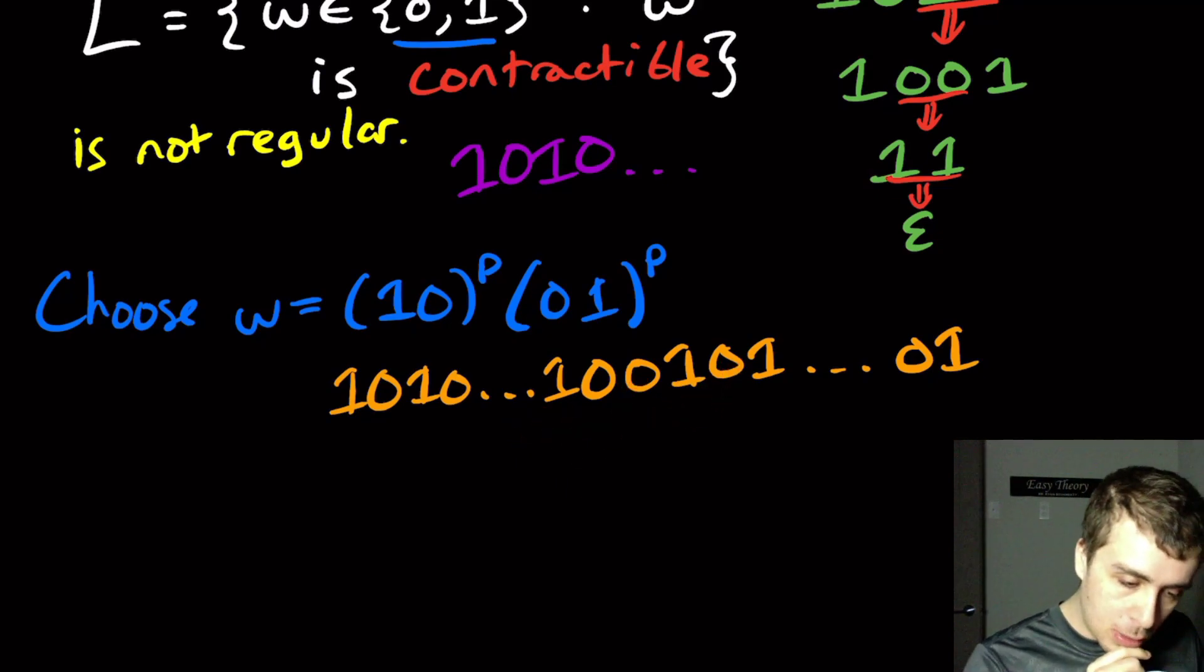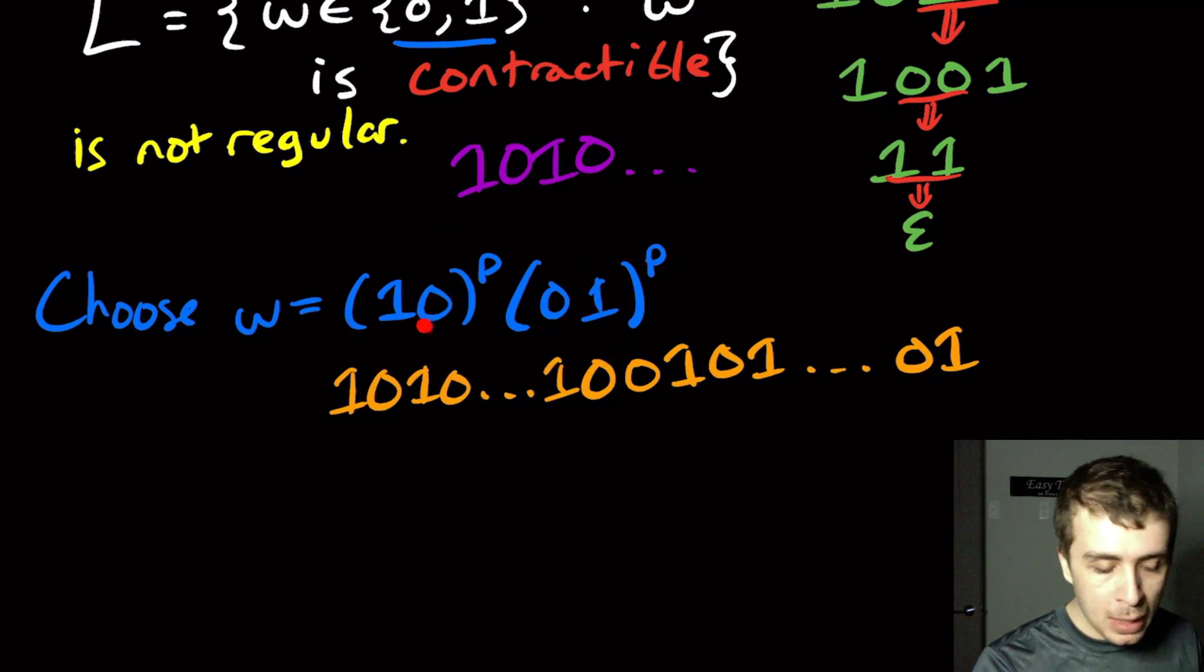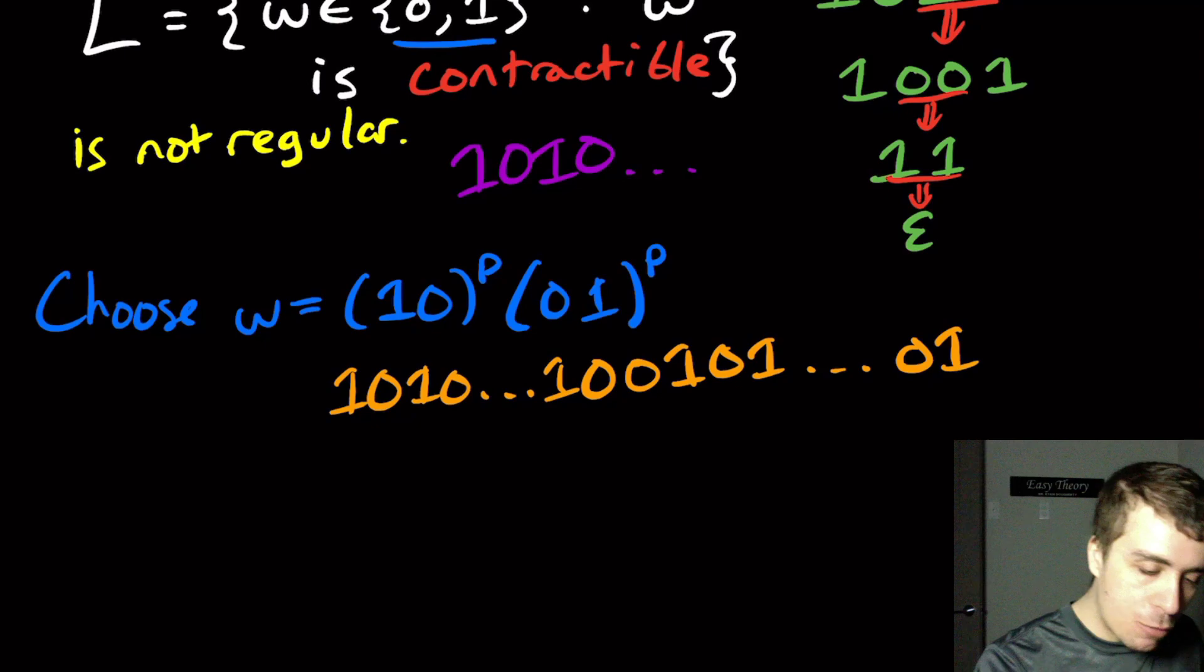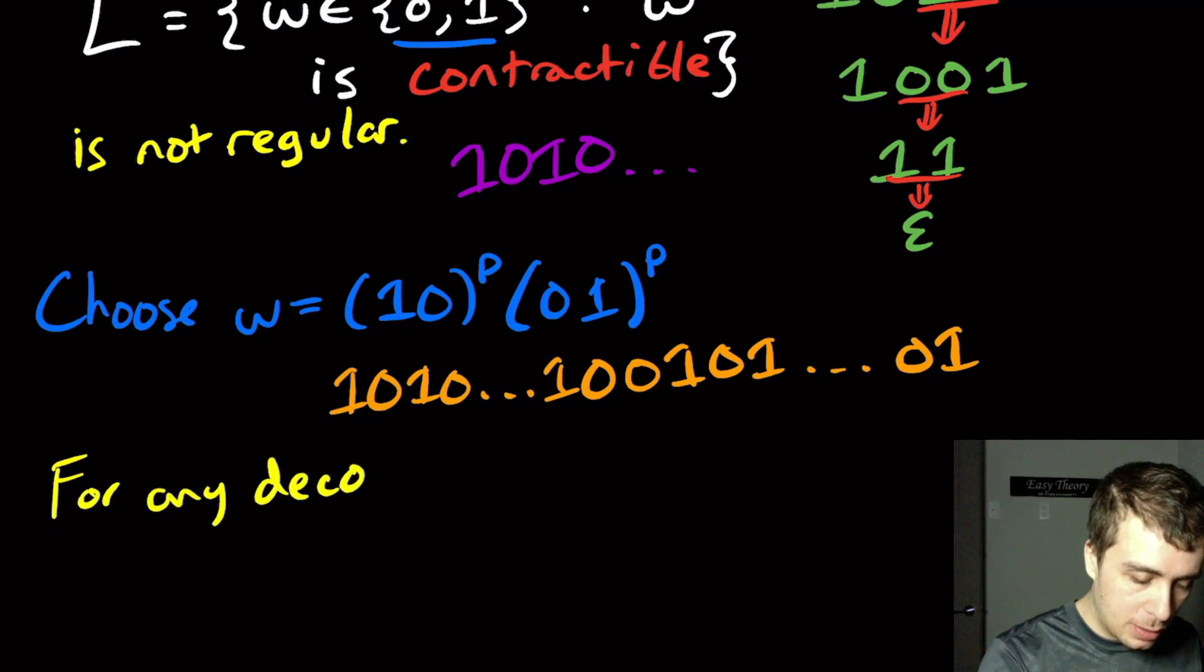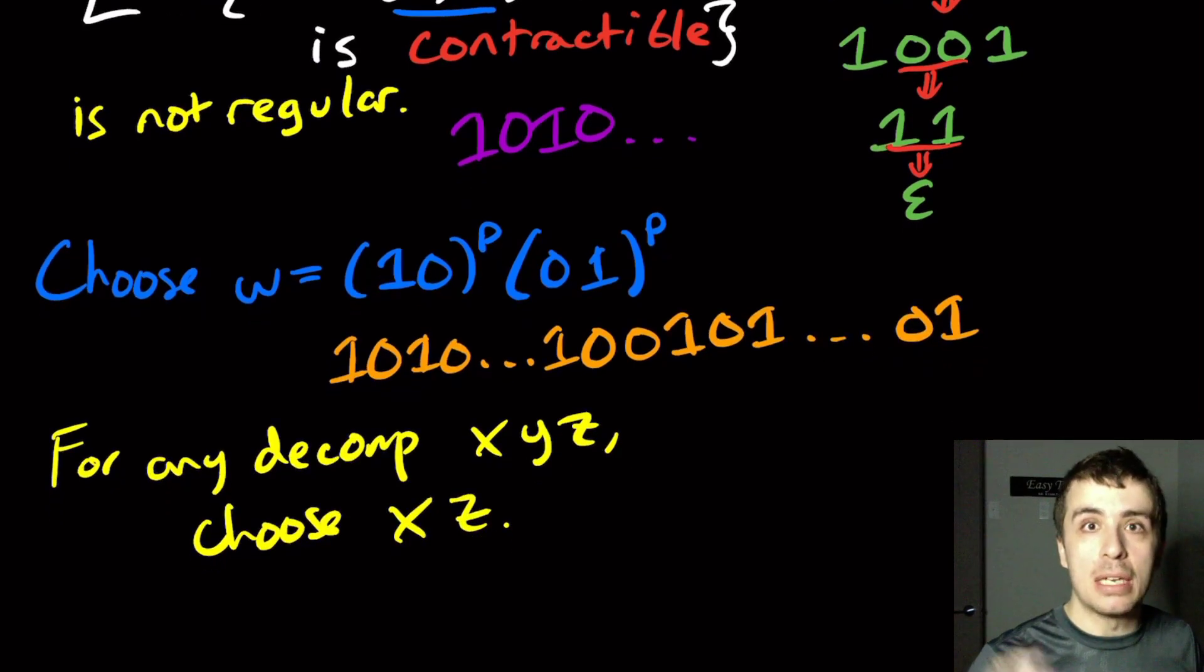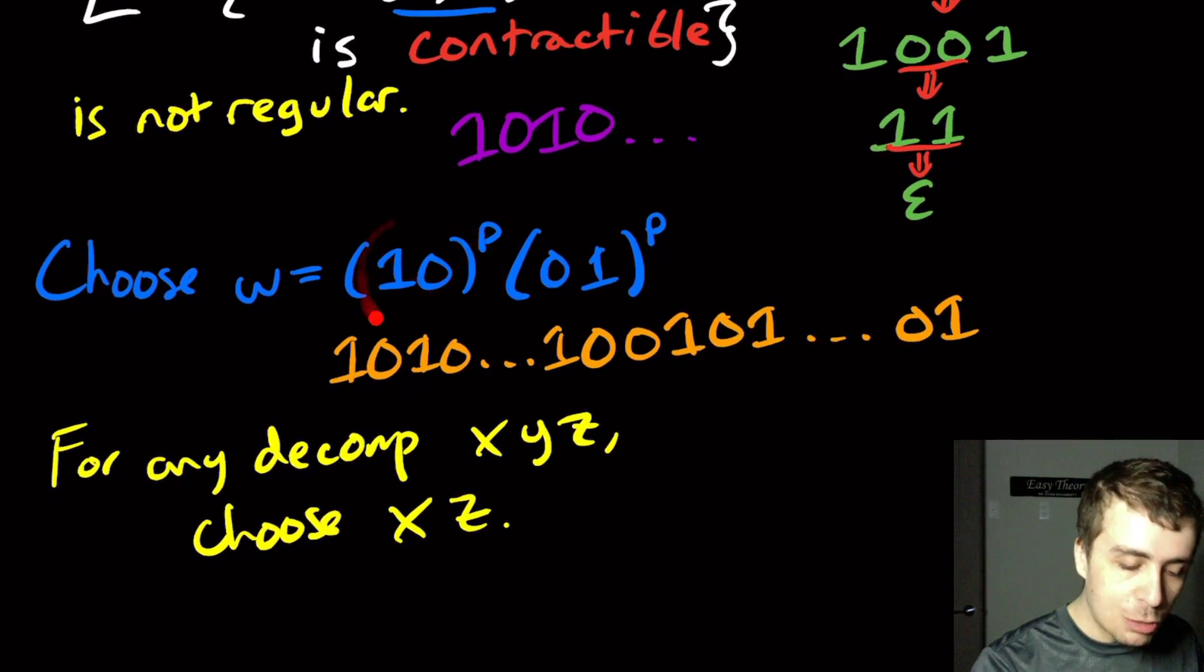How do you actually show that you can pump this string out of the language? Well, what you do is you pick any decomposition according to the pumping lemma rules, which says that the repeating part must be within this section right here, the one at the beginning. That means that if we use the same ideas in the main video, for any decomposition XYZ, we're going to look at the string XZ. That means we're going to take out the repeating piece, which means that at least one character in this side has to go down, has to be taken away.